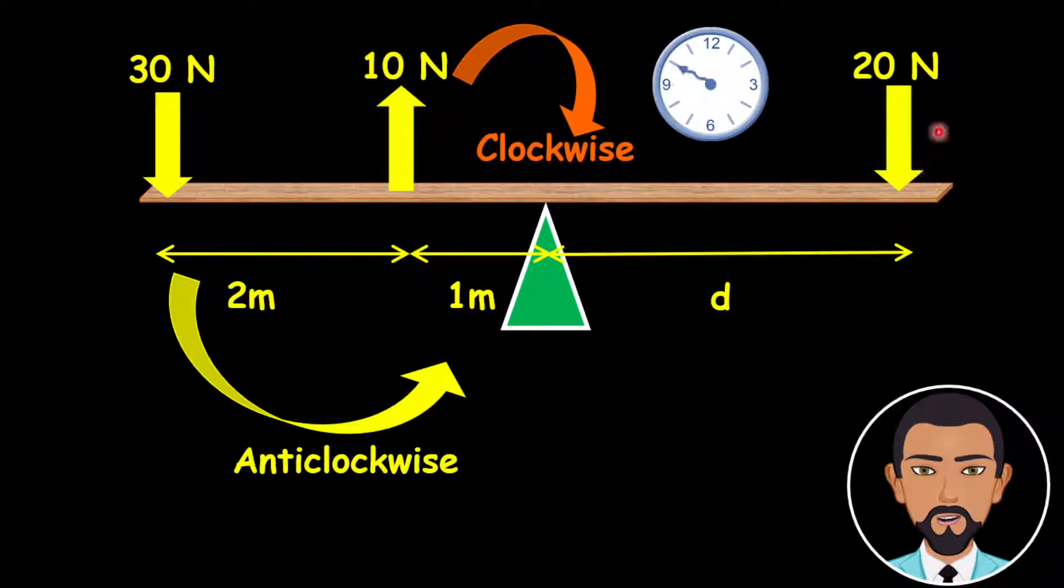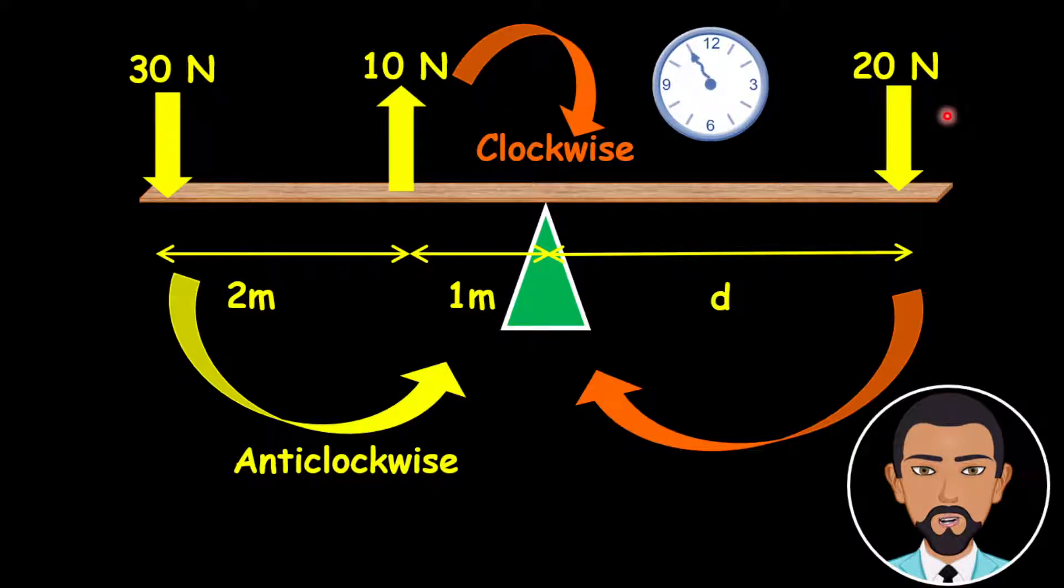Now the turning effect by the 20 newtons is going in the direction of the pivot in that direction indicated by the orange arrow, and it's also considered as a clockwise moment.